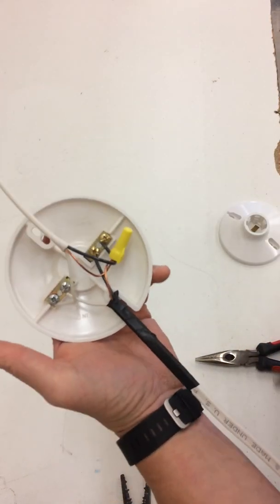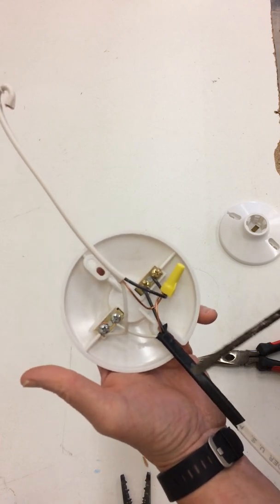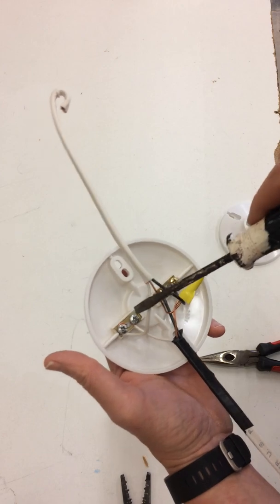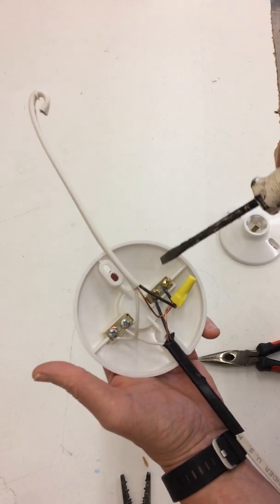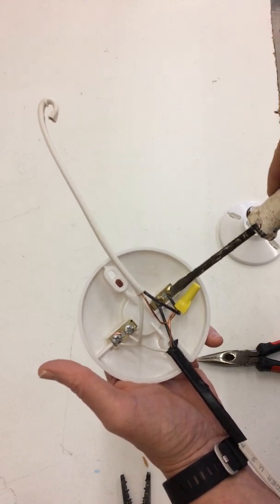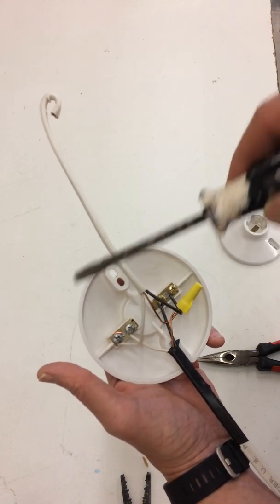So we have a service wire bringing electricity into our system. We've attached the black wire to the bronze, the white wire to the silver. We have another wire that's proceeding out to another light. And we have the black wire to the bronze and the white wire to the silver.